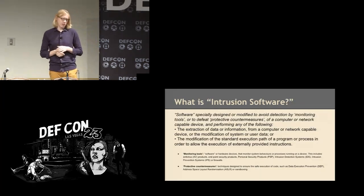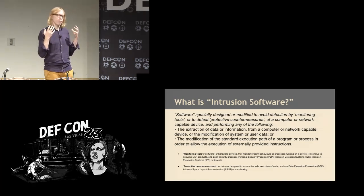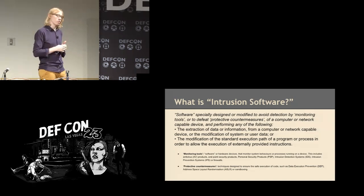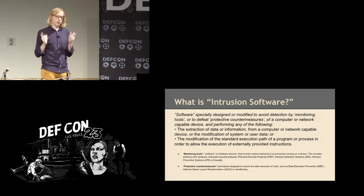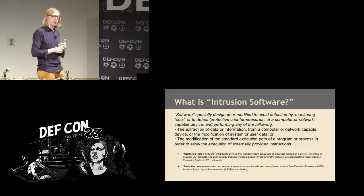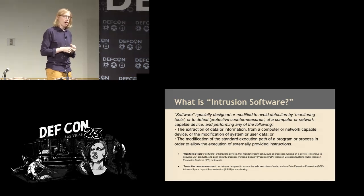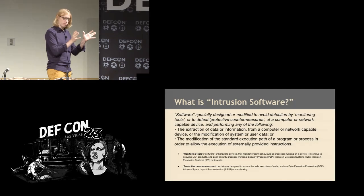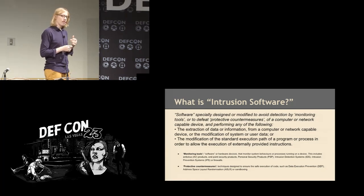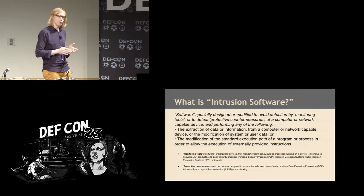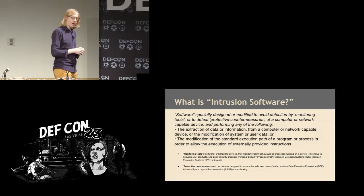Intrusion software is the largest point of controversy, and rightfully so. The Wassenaar Arrangement puts together a definition of what it calls intrusion software: software specially designed or modified to avoid detection by monitoring tools or defeat protective countermeasures of a computer or network-capable device, and performing all of the following: the extraction of data or information from a computer or network-capable device, or the modification of user data — or the modification of the standard execution path of a program or process in order to allow the execution of externally provided instructions. They provide definitions for monitoring tools and protective countermeasures, and things like DEP and ASLR now show up in export control language.